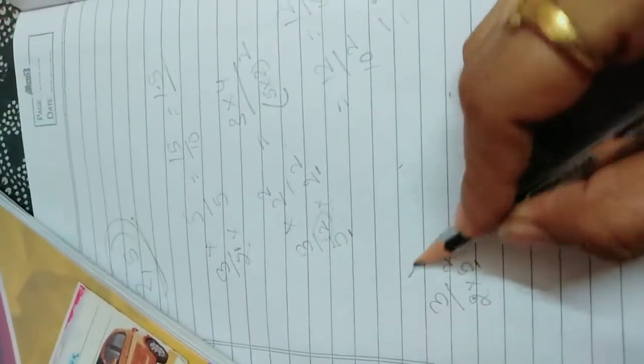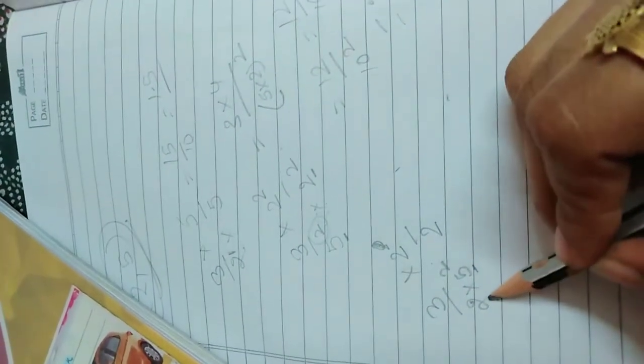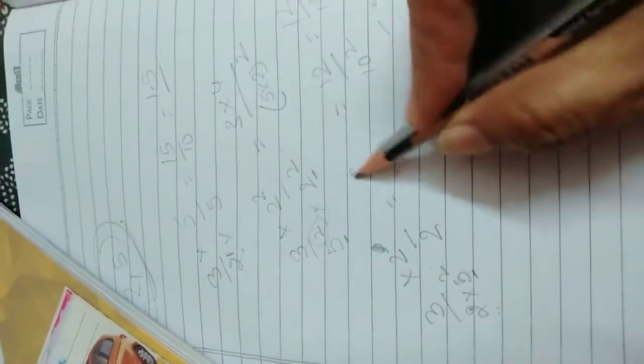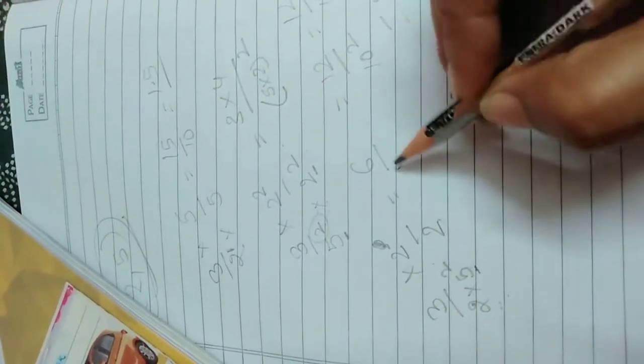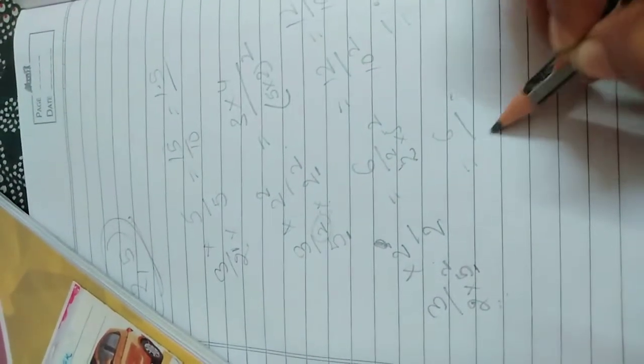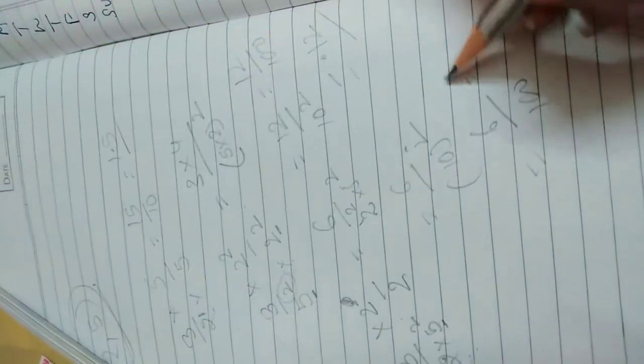Every time your power should be same. Now when you multiply 2 with 2 it will become 2 squared. Now it can terminate. 6 upon, now this is 2 squared into 5 squared, that is 6 by 10 squared, 6 by 100, that is 0.06.